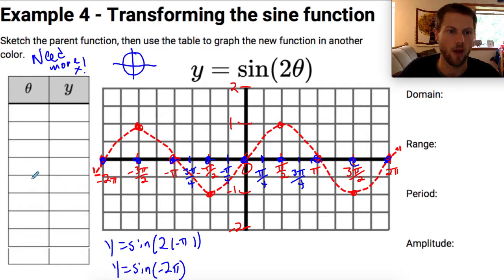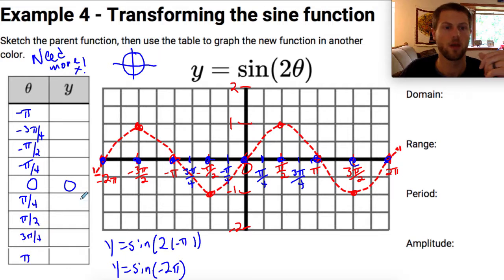Now let's fill out a new graph. I'm still going to keep zero in the center, and I know that's zero. Let's go in intervals of pi over 4: negative pi over 4, negative pi over 2, negative 3 pi over 4, then negative pi, and then same thing the other direction: positive pi over 4, positive pi over 2, 3 pi over 4, and pi.